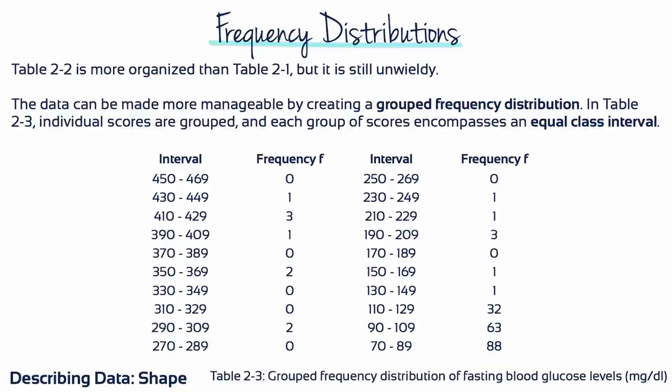The purpose for constructing a table is to obtain a relatively simple, organized picture of the data. This can be accomplished by grouping the scores into intervals and then listing the intervals in the table instead of each individual score. The result is called a group frequency distribution table and the groups are called class intervals.